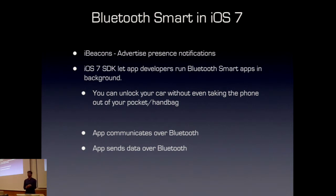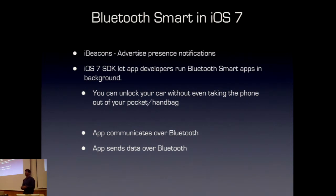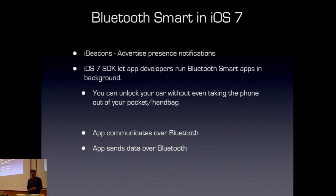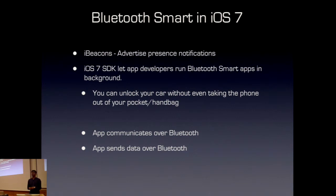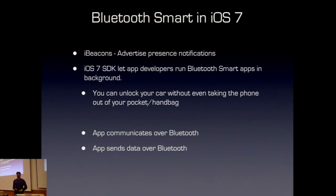iOS 7 introduced iBeacons, which is a way to advertise presence notifications. Devices as small as a fingernail can start acting as a beacon — a device that advertises that it is present here. Based on the content of the advertisement packet, you can determine metadata about what that beacon represents. For example, if you walk into a departmental store, iBeacons technology lets you know exactly where you are and where you want to go — something GPS can't do indoors in a multi-storey building.